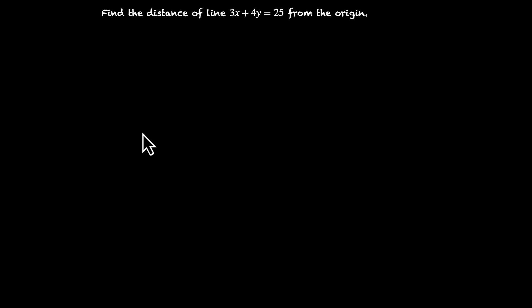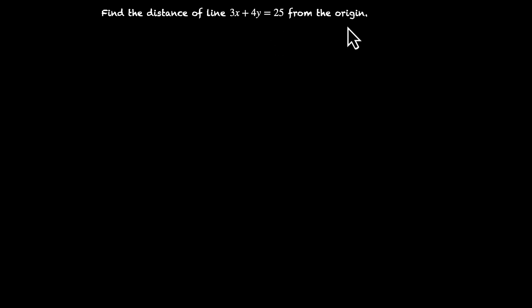In the previous videos, we learned how to find the distance between two points. In this video, we'll learn how to find the distance between a line and the origin. Here's an example: find the distance of the line 3x + 4y = 25 from the origin.